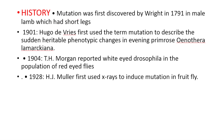Mutation was first discovered by Wright in 1791 in a male lamb which had short legs. In 1909, Hugo DeVries first used the term mutation to describe the sudden heritable phenotypic changes in the evening primrose.